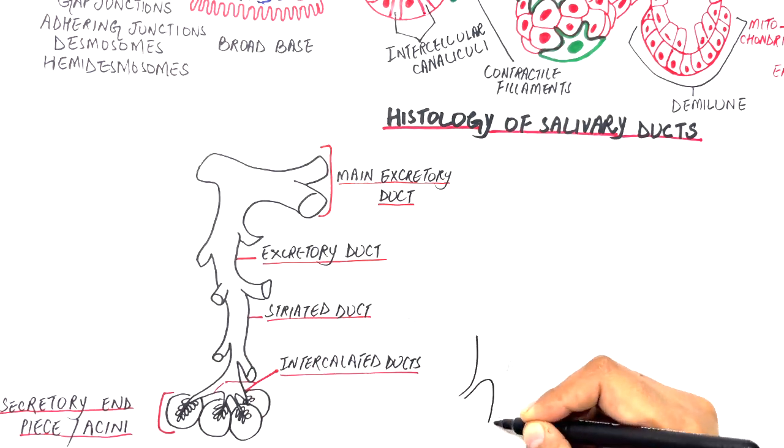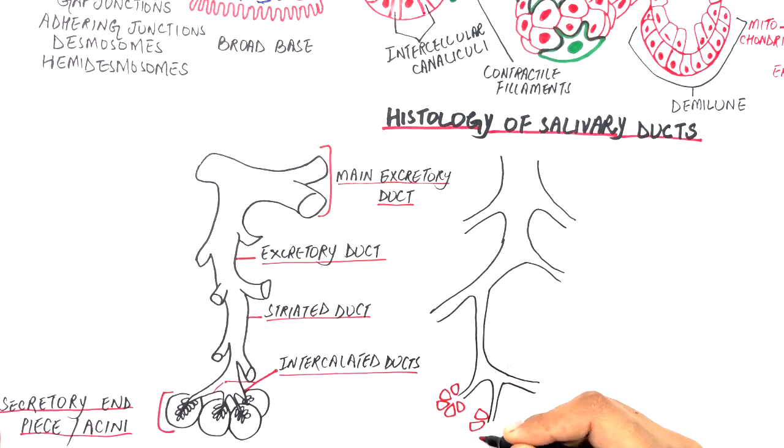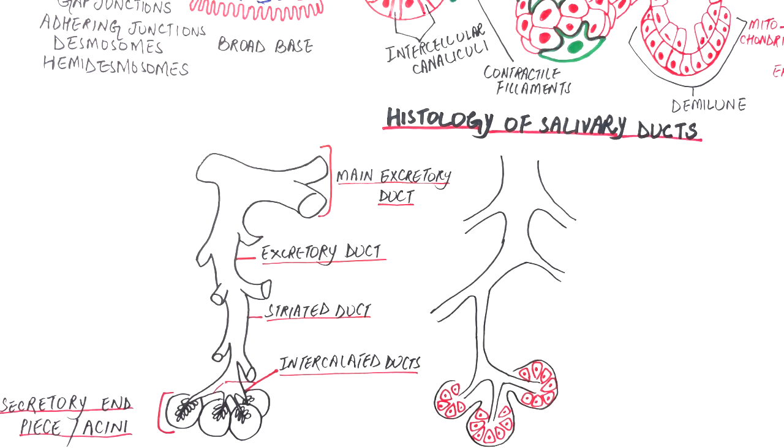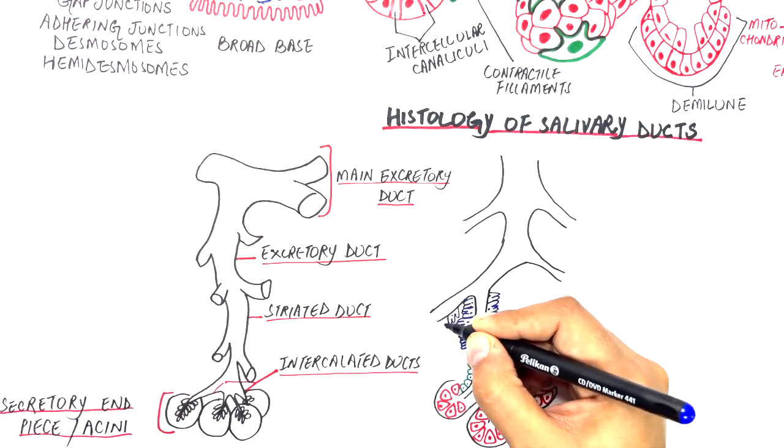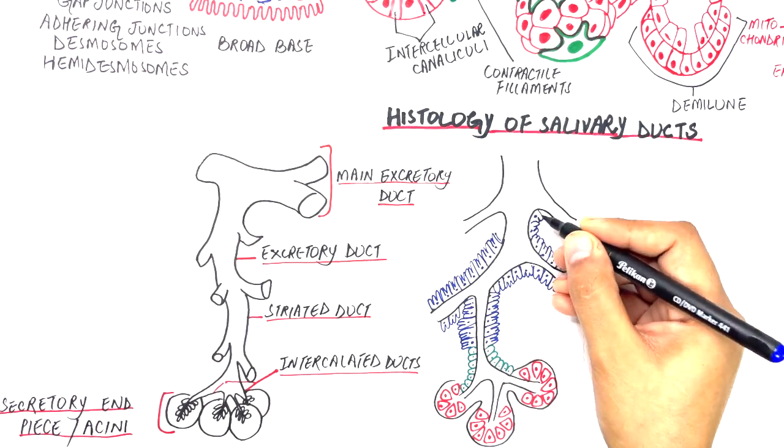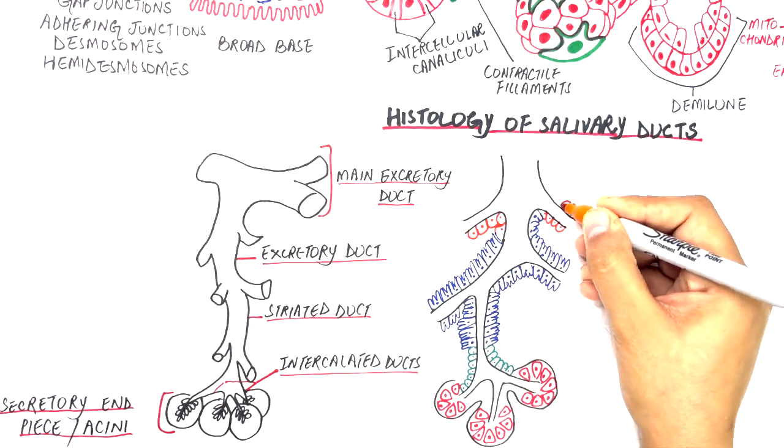Let's draw a more detailed diagram and look into the histology of each type of duct. For simplicity of understanding, let's observe only a small bunch of acini and the associated ducts.